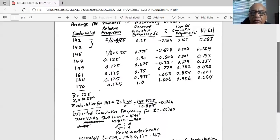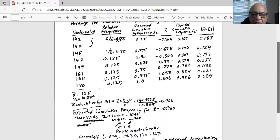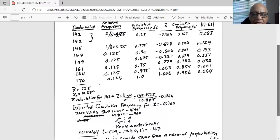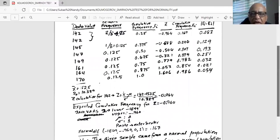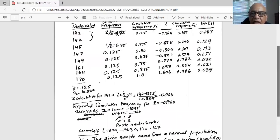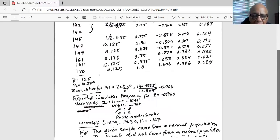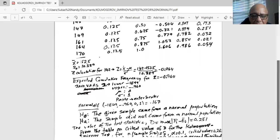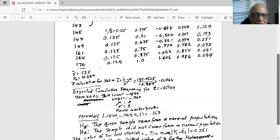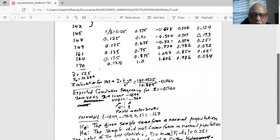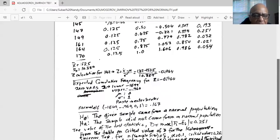And also I take the absolute difference. So if there's a negative difference, I make it positive. Now I look for the highest difference of fi minus ei or the highest value in the column, absolute value of fi minus ei, which is 0.251. For 149, 0.251.